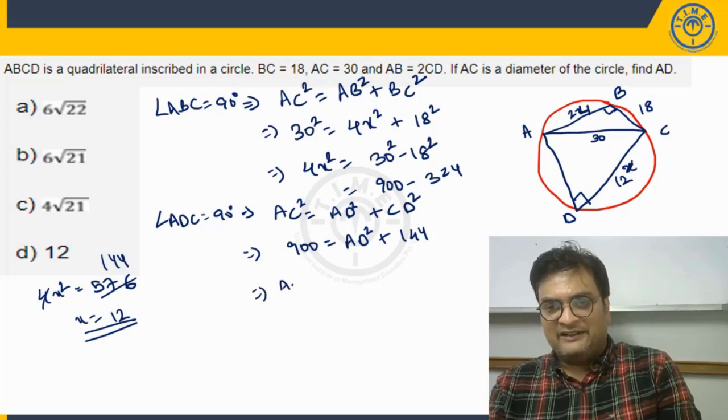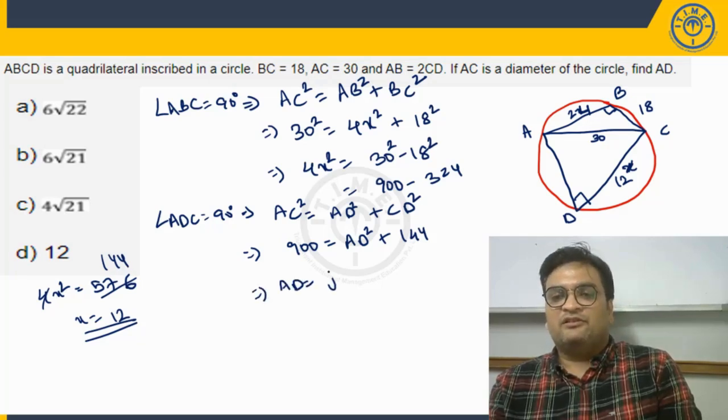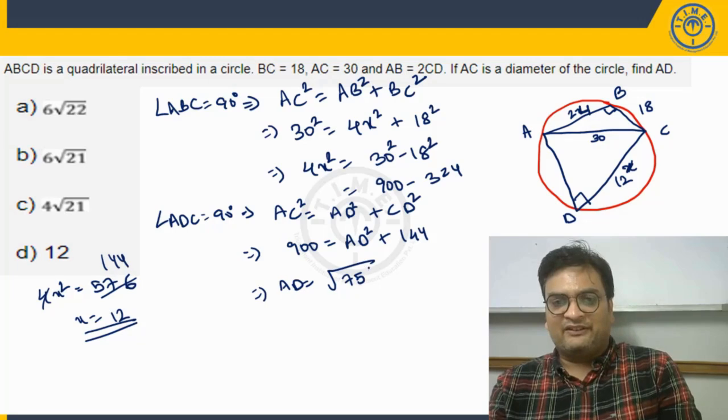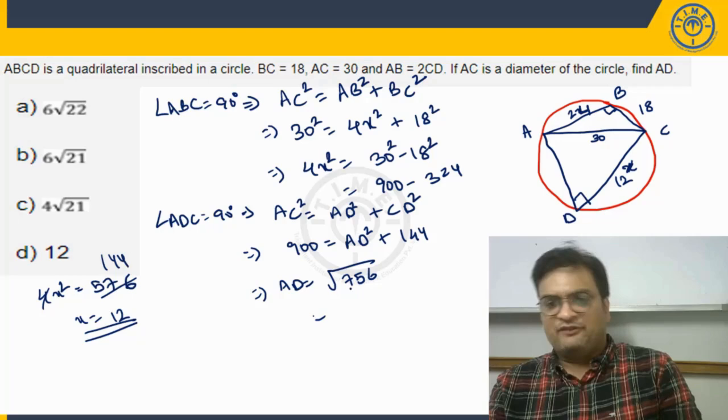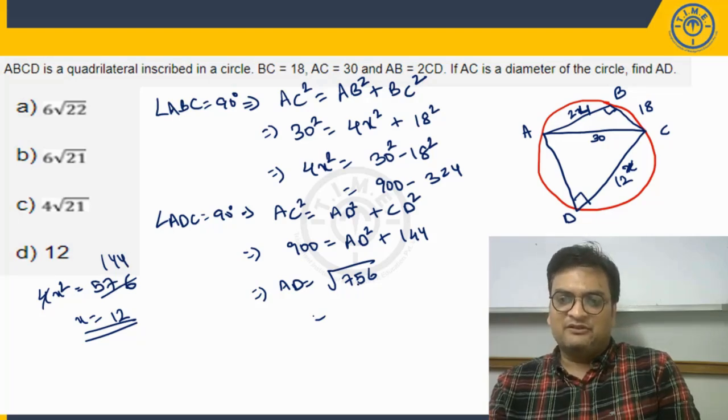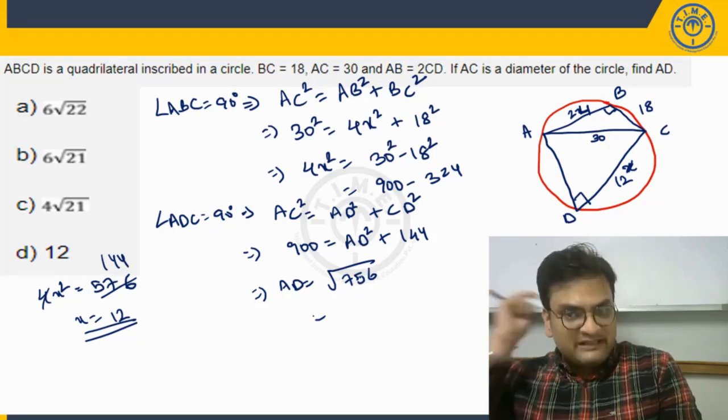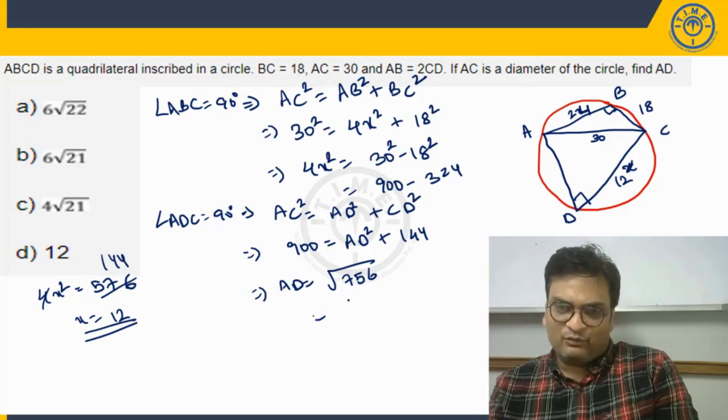So we will get AD as root 756, root 756. So what can we take out common? Let us look at it. So if we take out 6, 6 into 126, 126. So we can take out 36 common.